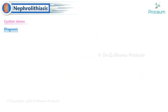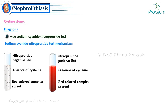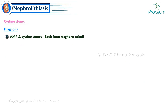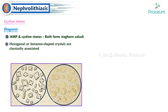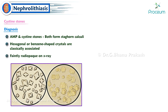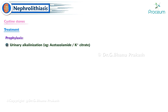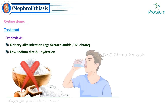Patients with cystinuria have a positive sodium cyanide nitroprusside test: cyanide converts cystine to cysteine, which binds nitroprusside, turning the reaction red. Both ammonium magnesium phosphate and cystine stones can form staghorn calculi. Hexagonal or benzene-shaped crystals are classically associated with cystine stones, which are faintly radiopaque on X-ray.